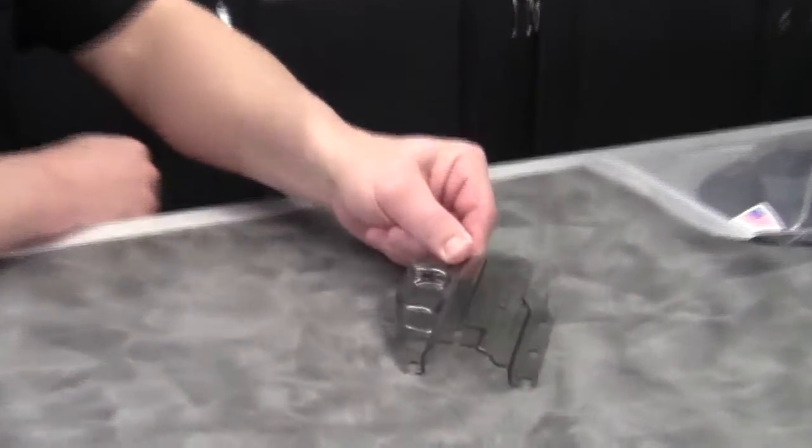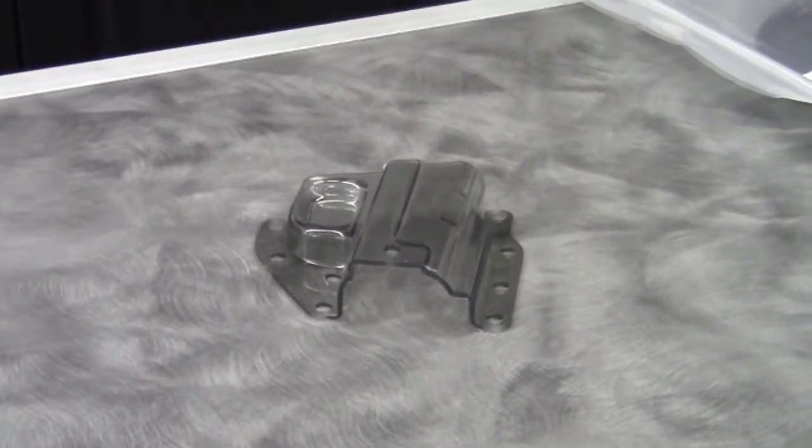And they also have a 5-axis router, so they cut the parts out, so this is how it comes to us. Then at that point, we do what we need to do to get it ready for production.